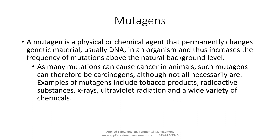Let's go over a couple of definitions first. A mutagen is a physical or chemical agent that permanently changes genetic material. Just like the word says — mutagen — it mutates something. When we think about mutagens, we obviously think about how Spider-Man was bitten by that radioactive spider and from that point on could shoot webs. In the real world, it does not work that way. As many of these mutagens can cause cancer in animals, such mutagens can therefore also be considered a carcinogen, but they're not always exactly the same.